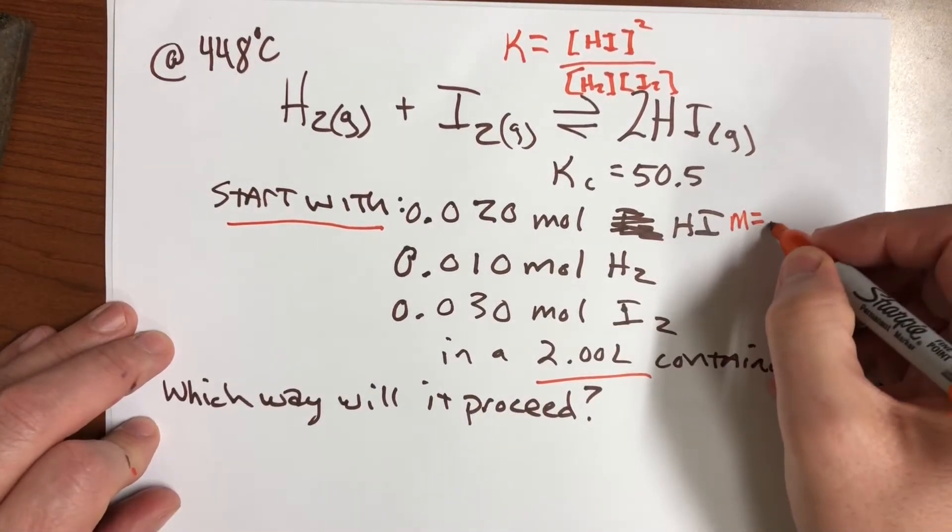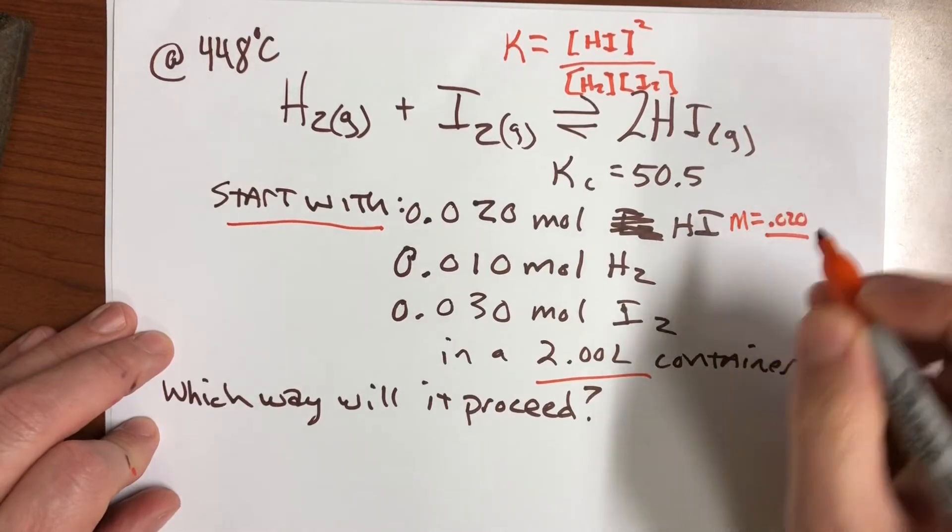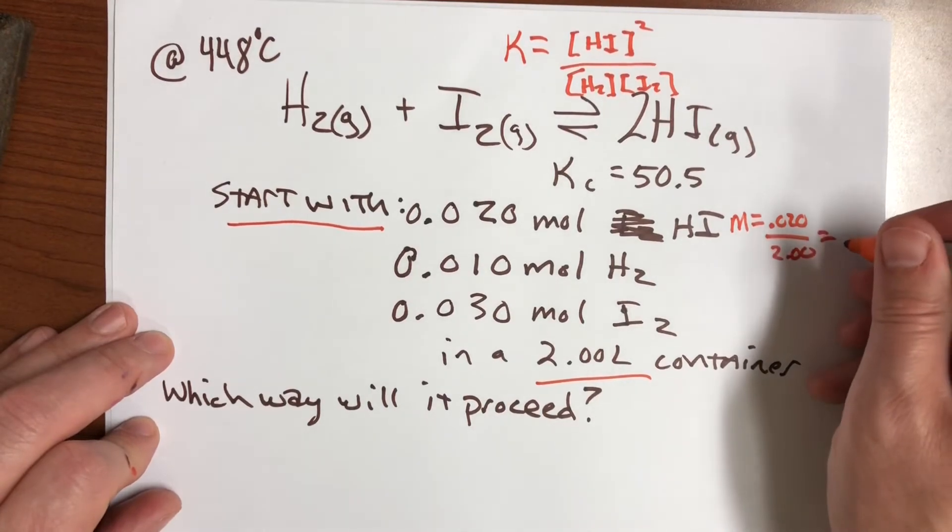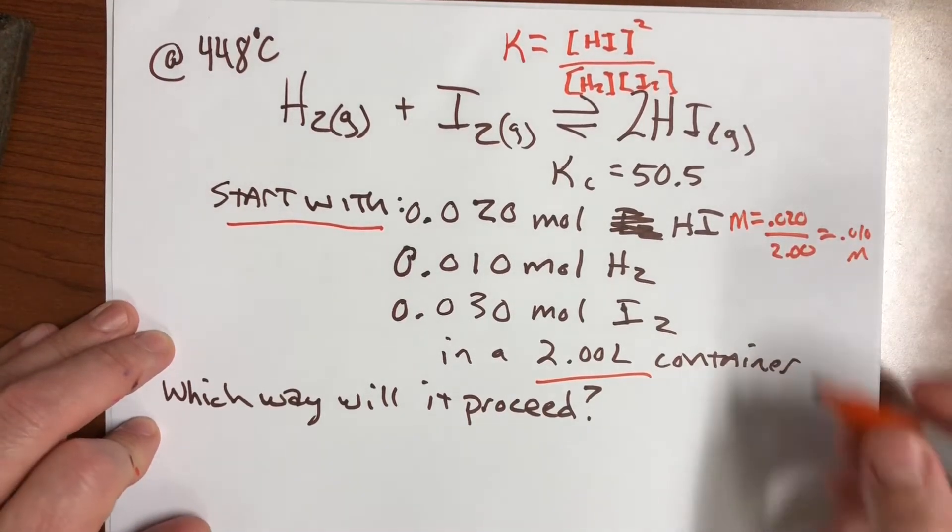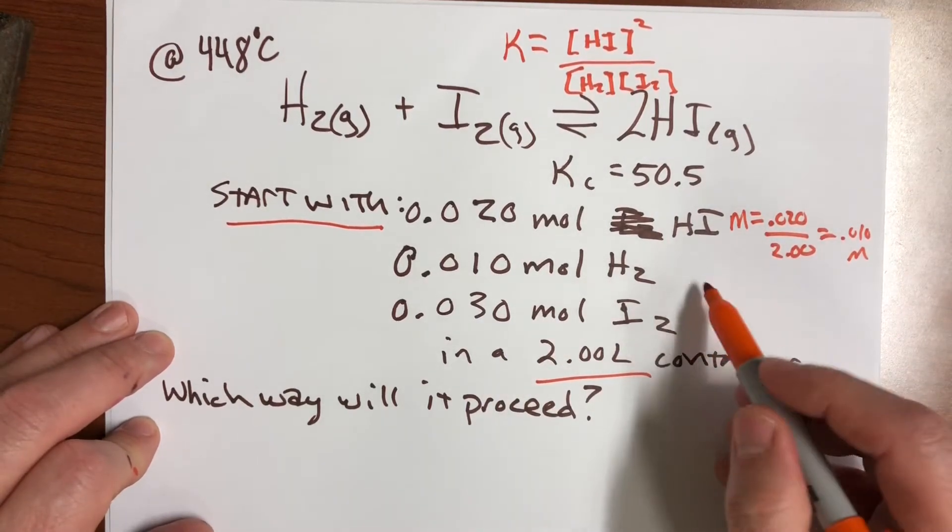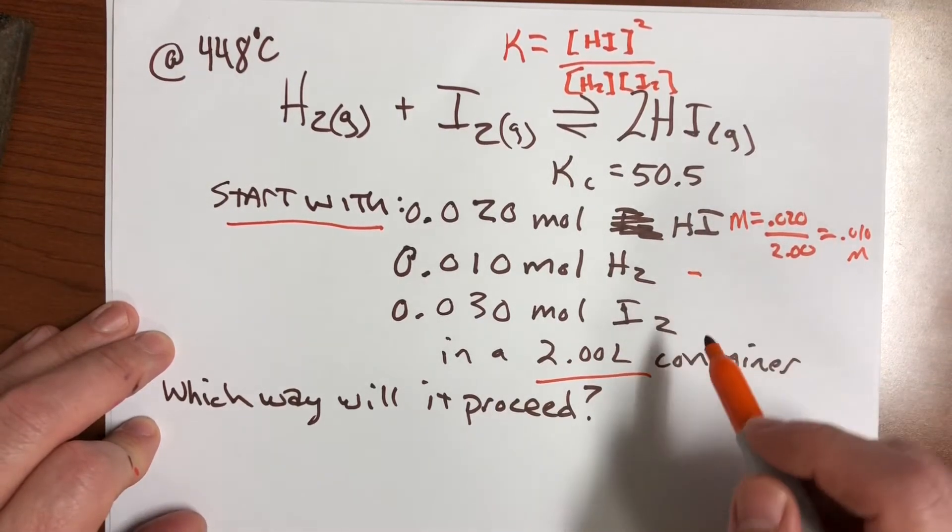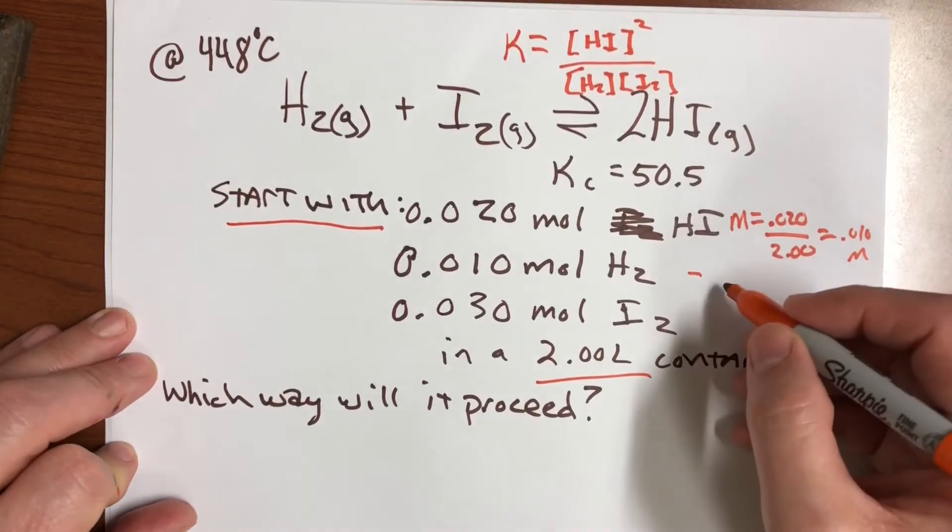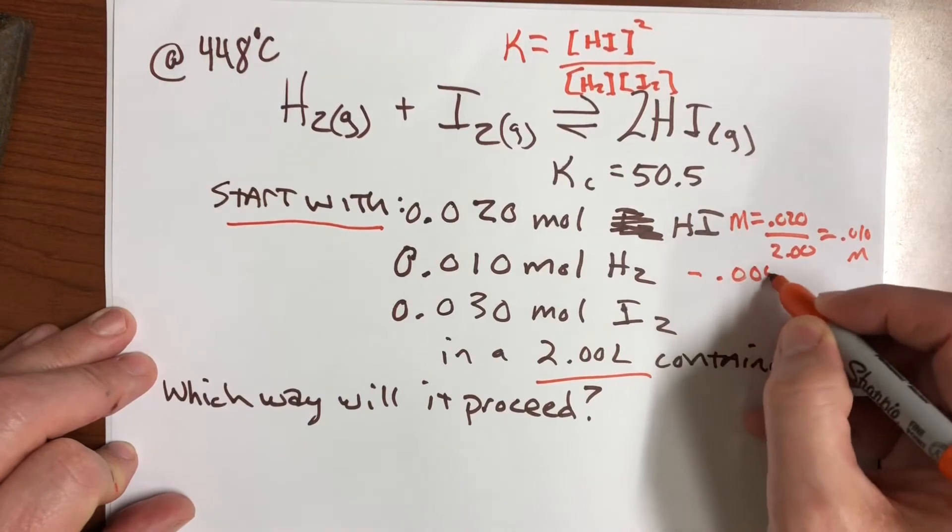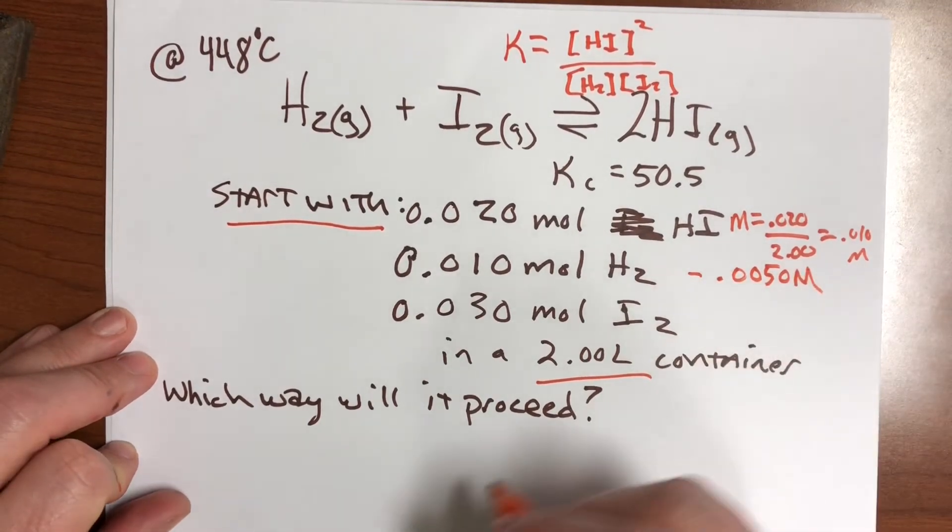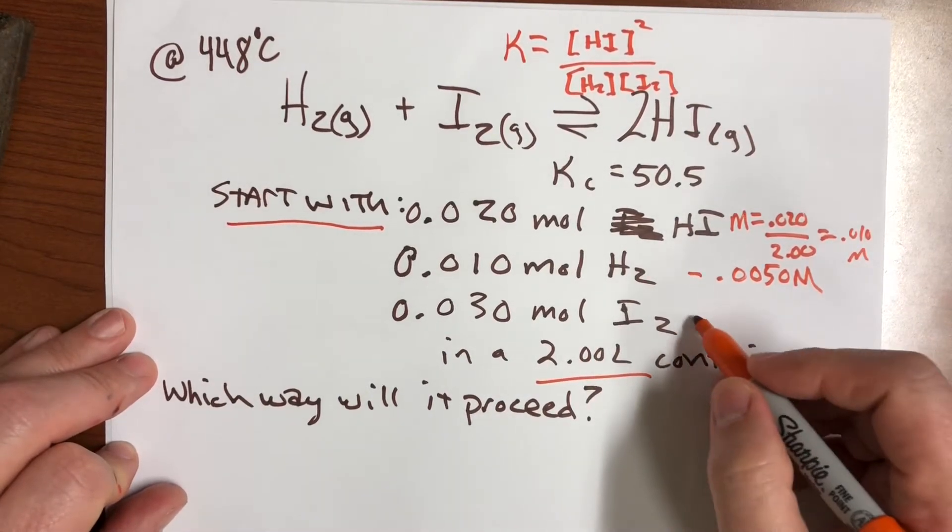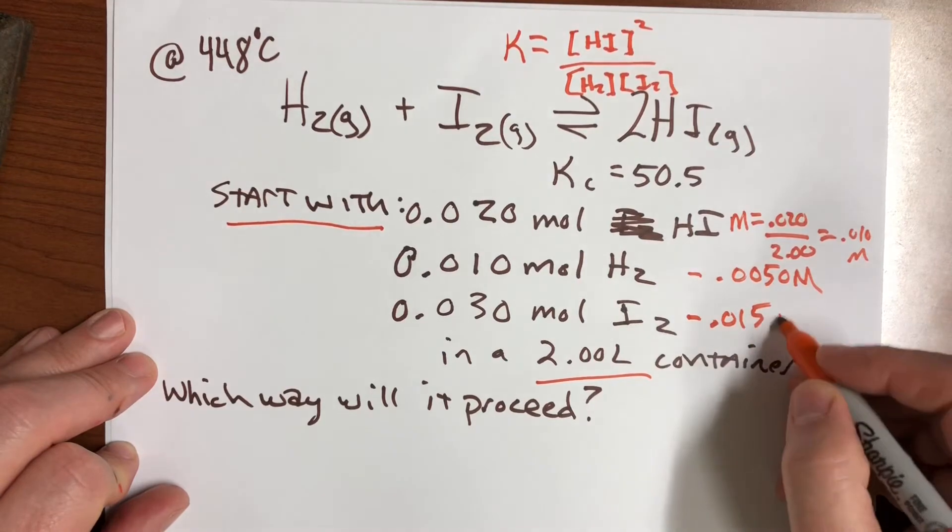We're going to need to find the molarity of this. Well, the molarity is the moles, which is 0.020, divided by the liters, which is 2, so let's see, 0.010 molar for that one. And so the HI is 0.01 molar. The H2 is 0.005 molar. And then the I2 is 0.015 molar.